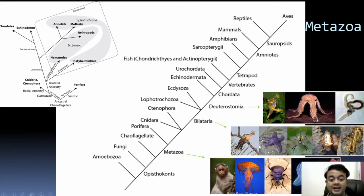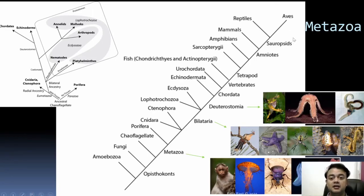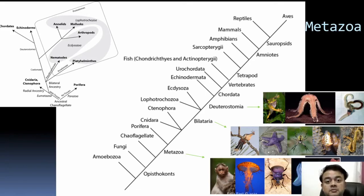Inside Deuterostomia: Echinodermata and Chordata. Inside Chordata: Urochordata and Vertebrates. Inside Vertebrates: fish and Tetrapoda. Inside Tetrapoda: Sarcopterygii and Amniota. Inside Amniota: Mammals and Sauropsida. Inside Sauropsida, reptiles and birds are part of the same clade — so phylogenetically a chicken can be called a kind of dinosaur. The speaker references their book 'Creatures of India' about Indian animals, which uses a mix of old and new classification systems.